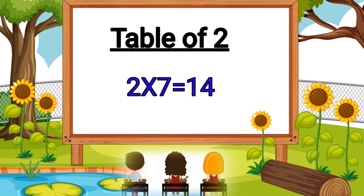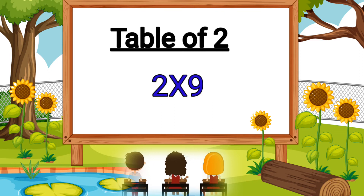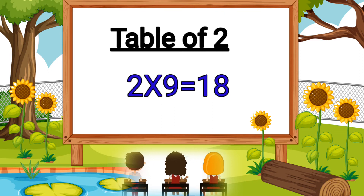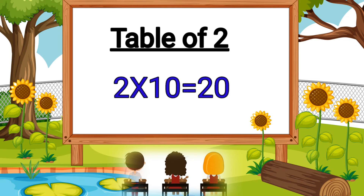Two sevens are fourteen. Two eights are sixteen. Two nines are eighteen. Two tens are twenty.